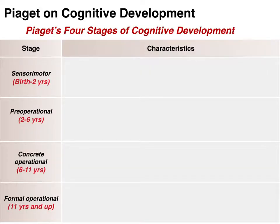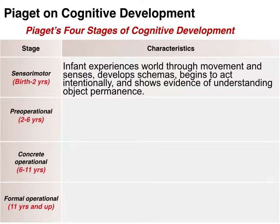In that first sensorimotor stage, infants are experiencing the world through movement and senses. They're going to develop schemas — this idea of how things are supposed to work, how something's supposed to be. They start to act intentionally, and again will show evidence of object permanence.